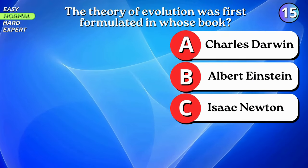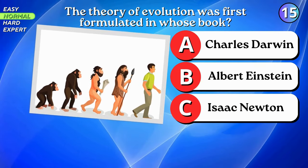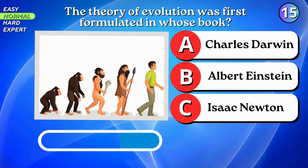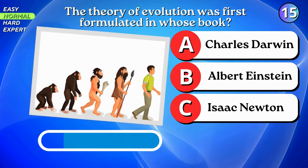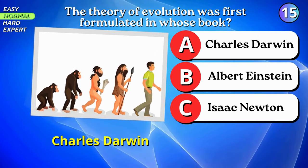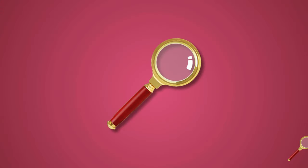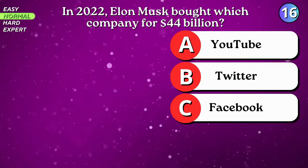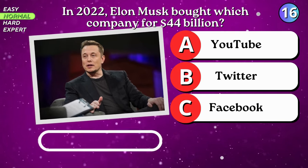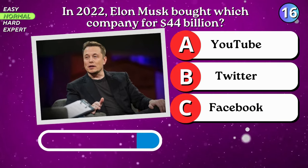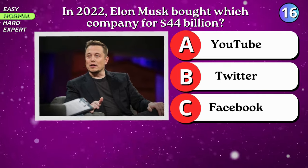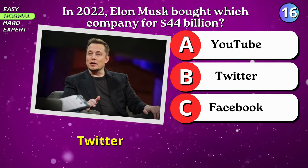The theory of evolution was first formulated in whose book? Charles Darwin. In 2022, Elon Musk bought which company for $44 billion? Twitter.